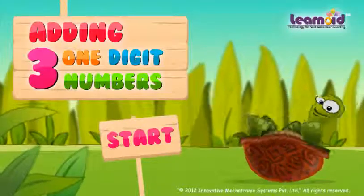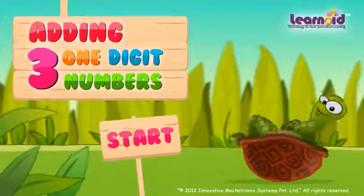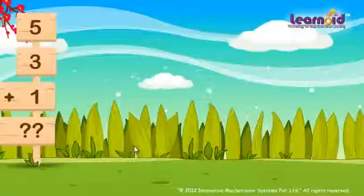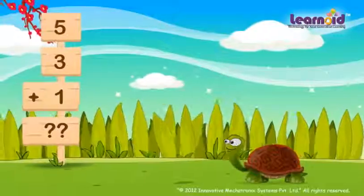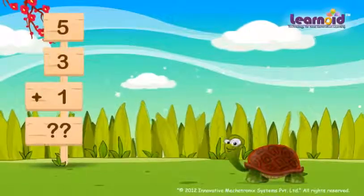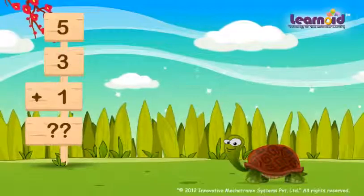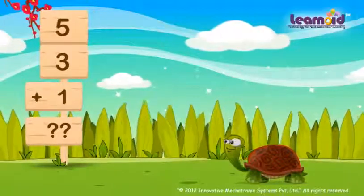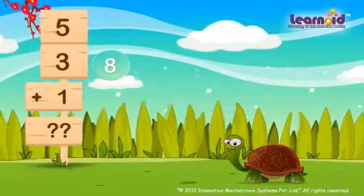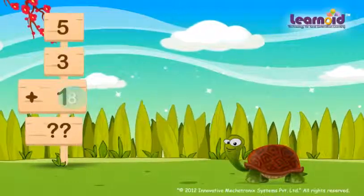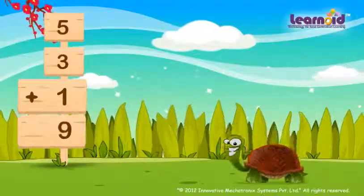Today we will learn how to add three one-digit numbers. Numbers are 5, 3 and 1. First we will add the first two numbers. 5 plus 3 is 8. Now 8 plus 1 is 9. Answer is 9.